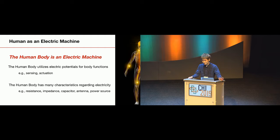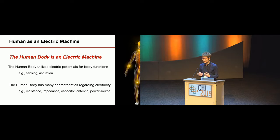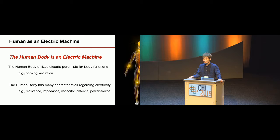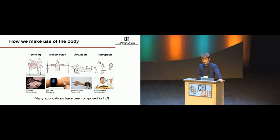Why is this interesting? The human body is really a kind of electric machine. It utilizes electric potentials for many body functions — for sensing, actuating muscles, and things like that. At the same time, the human body has many electric characteristics: it can work as a kind of resistance, a capacitor, an antenna, or even a power source. Many HCI researchers have utilized these unique electric characteristics for various applications in the field.